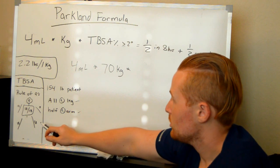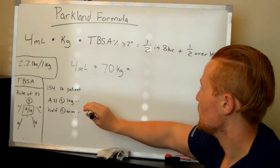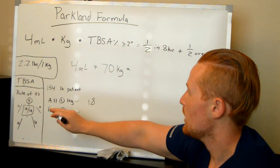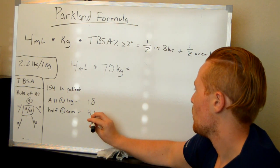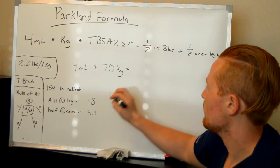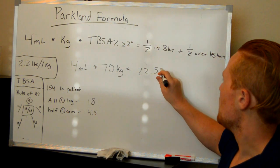So, all of the left leg, I told you, each leg is 9 in the front, 9 in the back. So 18 total. So we got 18% here, and then half of the left arm. The left arm is 9, so that will be half of it. We got 4.5, so we got 22.5%.